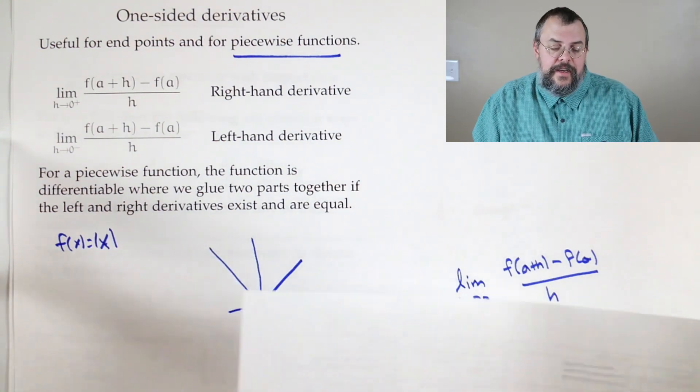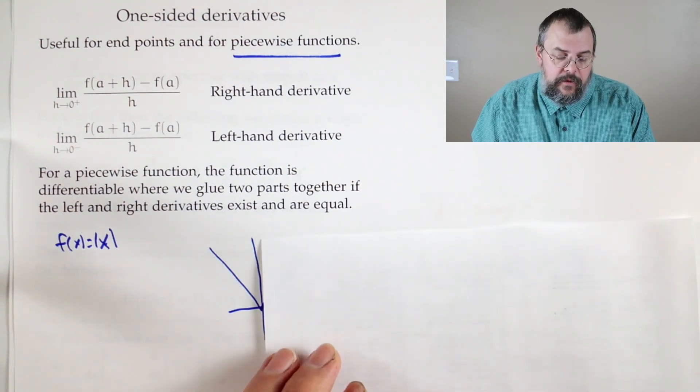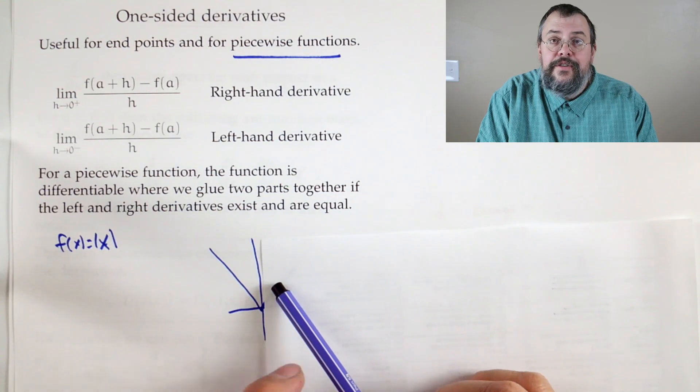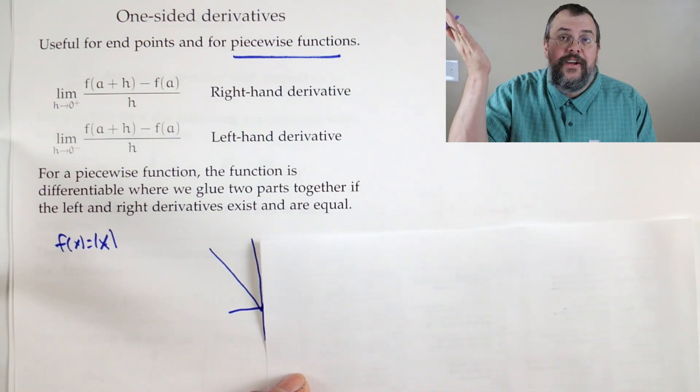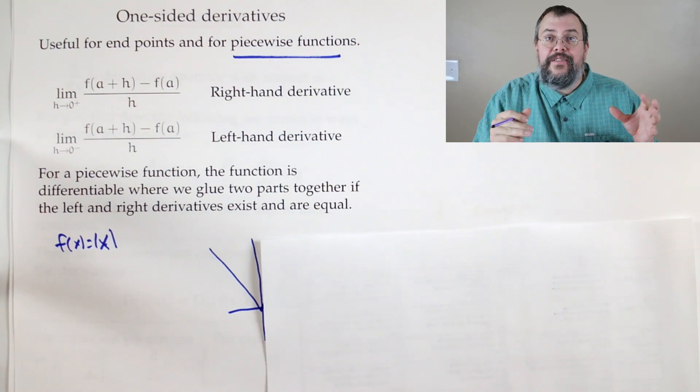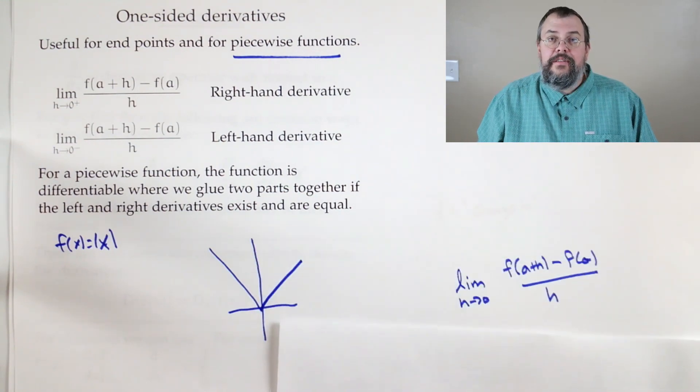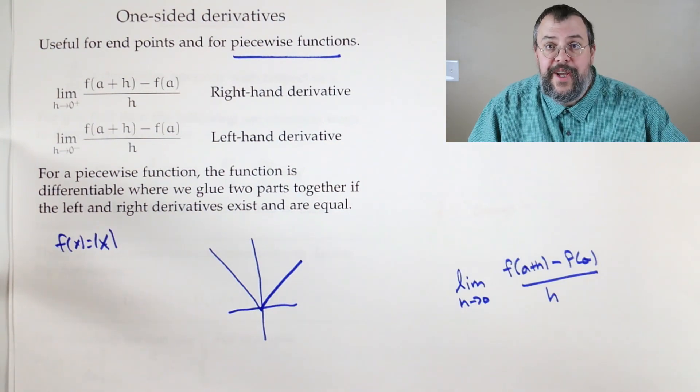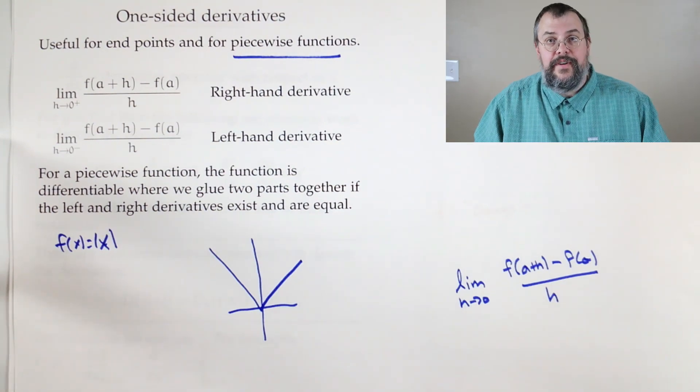On the other hand, I could cover up the right hand side and say, hey, what's happening on the left hand side? So if I only look at the left hand side, the slope, it's minus 1, because it's a line y equals minus x. And so what I see is I see two different derivatives, depending upon whether I look at a left hand or a right hand derivative.